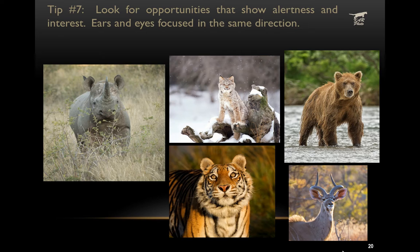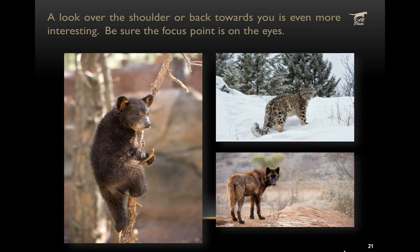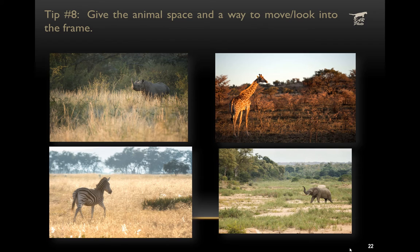The seventh tip is to look for opportunities that show alertness and interest in the animal — ears and eyes focused in the same direction is really key. With four-legged animals, the ears are constantly moving, the left one and right one often pointing in two different directions. But at some point, the ears always come forward and point in the same direction as the eyes — that's when you want to press the shutter. A look over the shoulder is also a very interesting and appealing shot, but make sure the focus point is on the face or eyes, not the back end, which is typically closer to the camera.